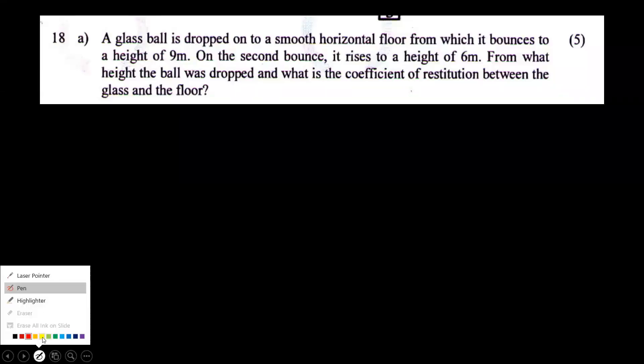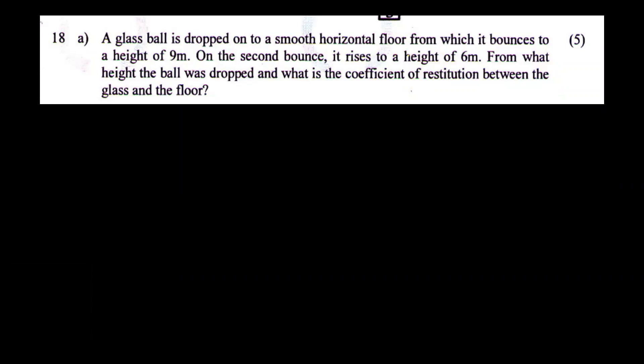A glass bowl is dropped onto a smooth horizontal floor, from which it bounces to a height of 9 meters. On the second bounce, it rises to a height of 6 meters. From what height was the ball dropped, and what is the coefficient of restitution between the glass and the floor?